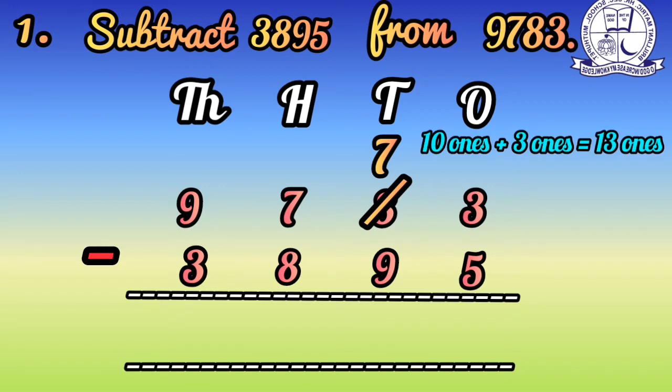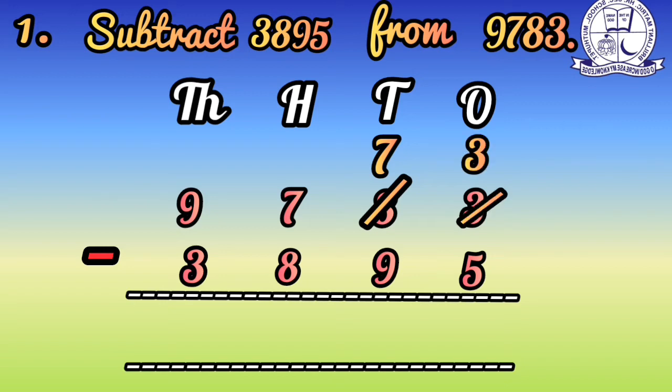We add the borrowed 10 to the existing 3 ones to get 13 ones. So we strike out the 3 in the tens place and reduce it by 1. Now in the ones place: 13 minus 5 equals 8. Write 8 in the ones column.